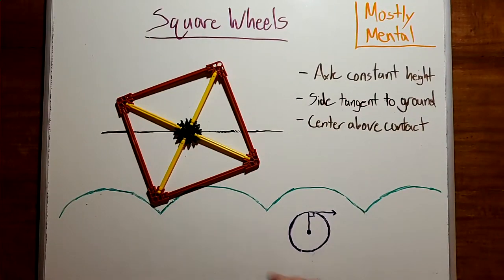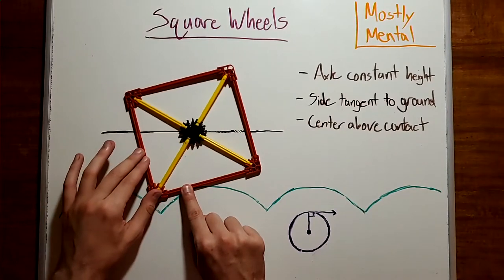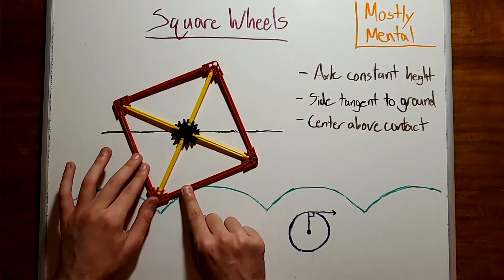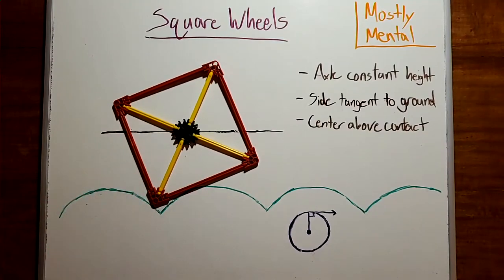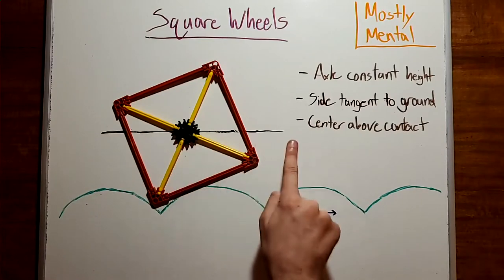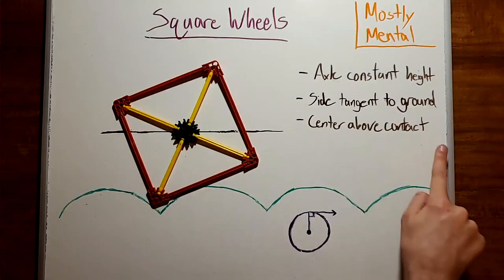And finally, at any moment, the point of contact is the center of rotation. The wheel is rotating around it. And for any rotating thing, the movement is perpendicular to the radius. So the center, which is moving horizontally, must be vertically above the point of contact.